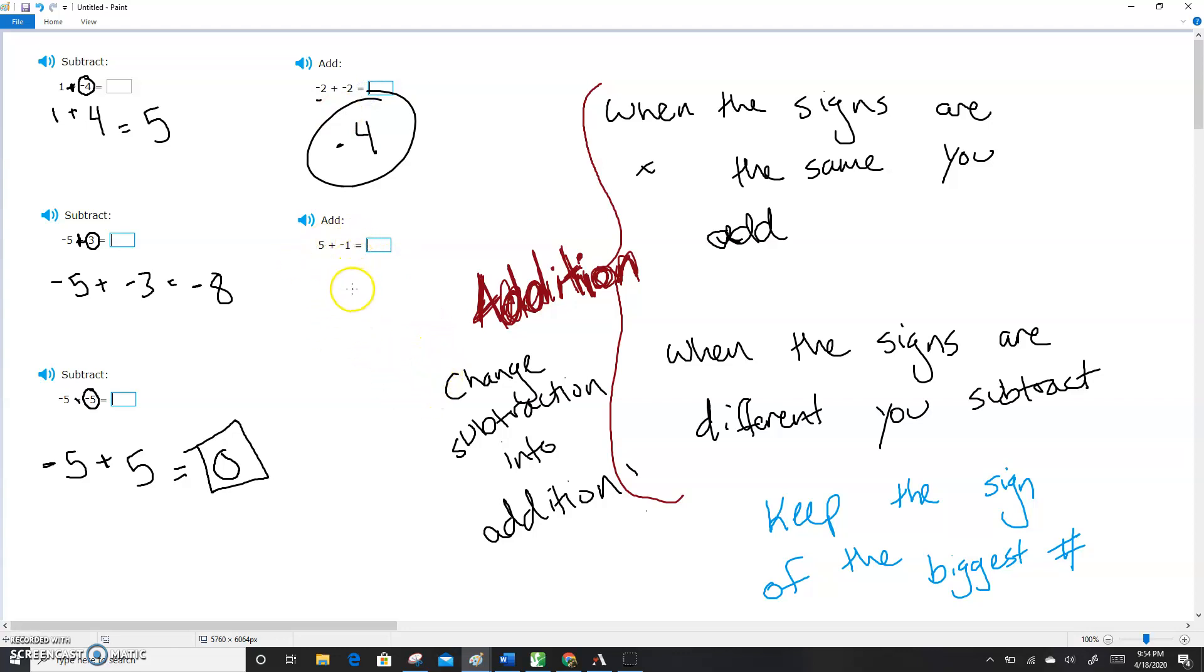Five plus negative one. The signs are different, so I'm going to subtract and get four. The biggest number is a positive five, so it's going to be positive four. And that is how you do it.